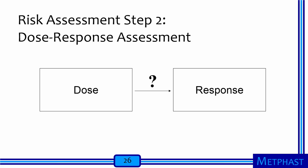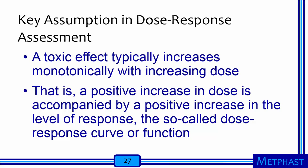Now we have finished discussing hazard characterization and are moving to dose response assessment. The goal here is to understand what level of dose causes what level of biological response. A key assumption in this process is that a toxic effect typically increases monotonically with increasing dose — that is, a positive increase in dose is accompanied by a positive increase in the level of response, the so-called dose response curve or function. However, as we shall see soon, even this assumption has been challenged.